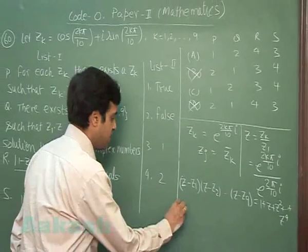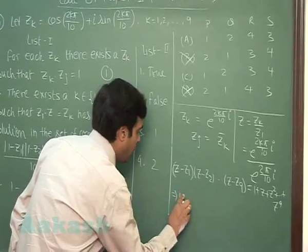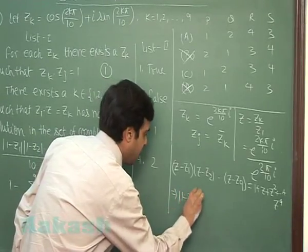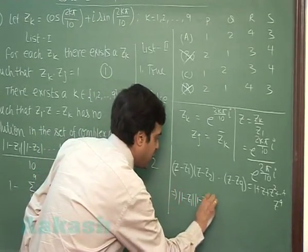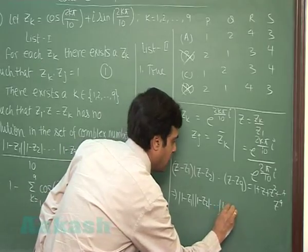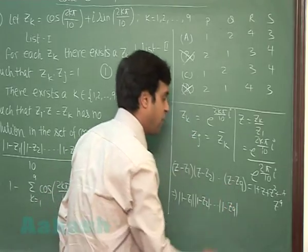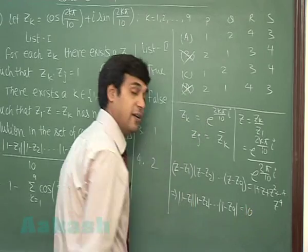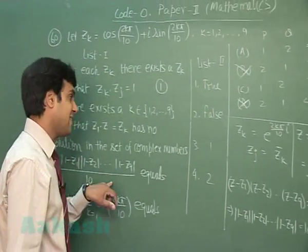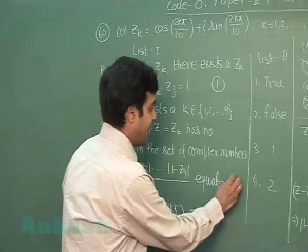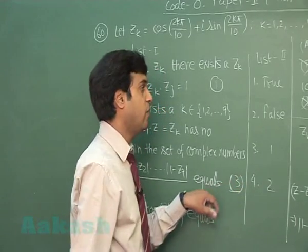On substituting z equals 1 and taking its modulus, we get modulus of (1 minus z1) times modulus of (1 minus z2) up to modulus of (1 minus z9) equals 10. So this is equal to 1. That is correct. Code is 3 for this one, means option C is correct.